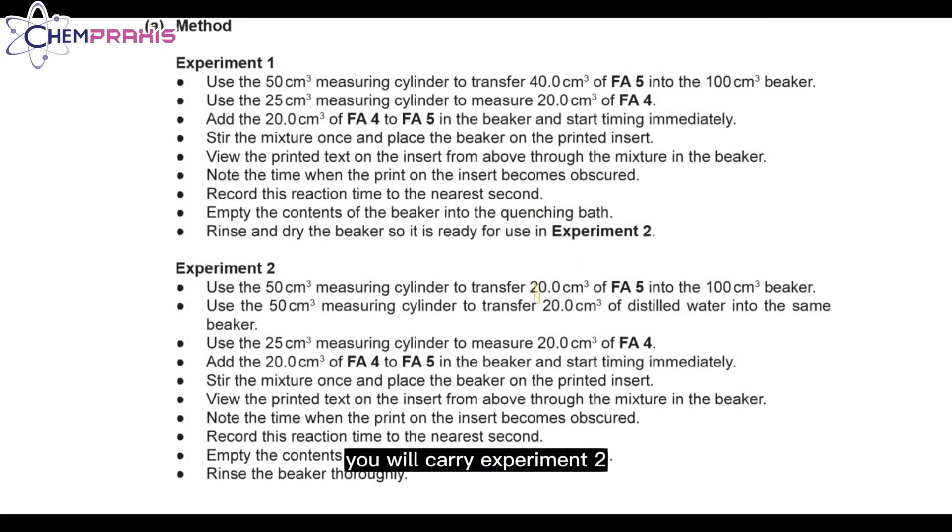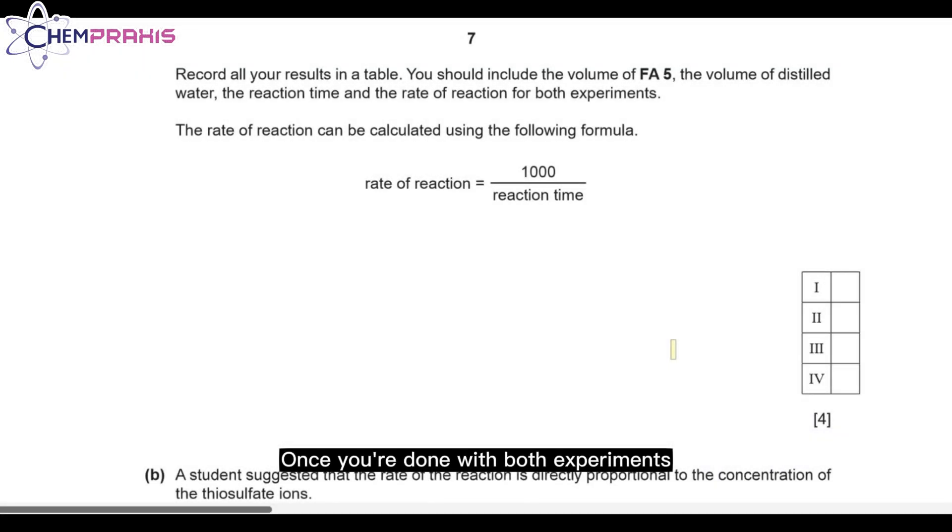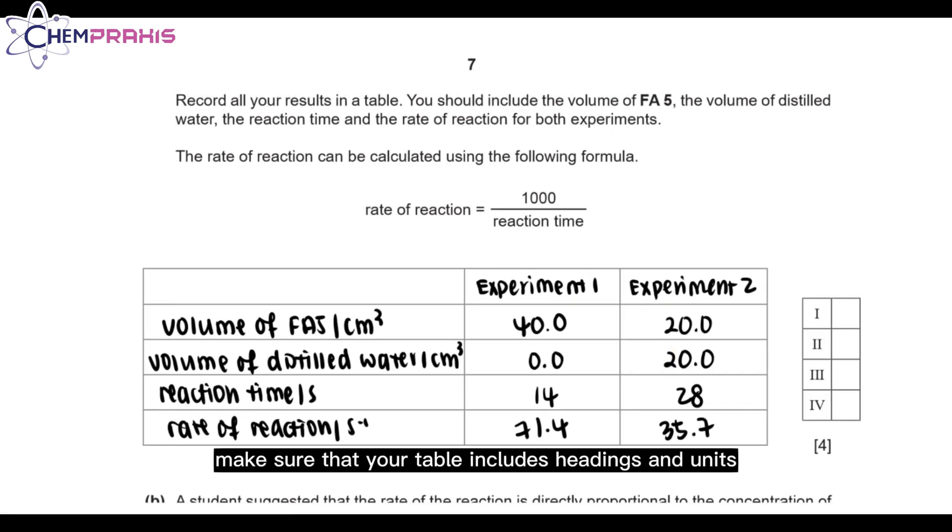After you're done with experiment 1, you'll carry out experiment 2 using 20 cm³ of FA5 and 20 cm³ of distilled water. You'll use the same volume of FA4 which is 20 cm³. Once you're done with both experiments, record all your readings in the table. Make sure that your table includes headings and units. You can calculate the rate of reaction using the formula given.